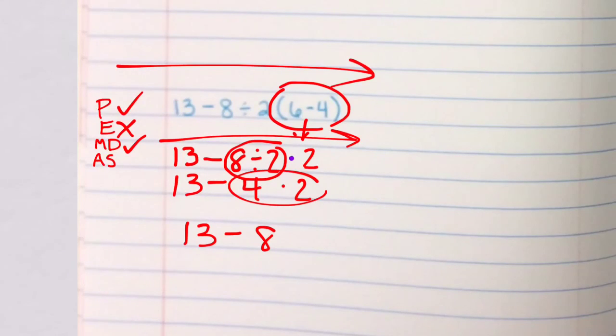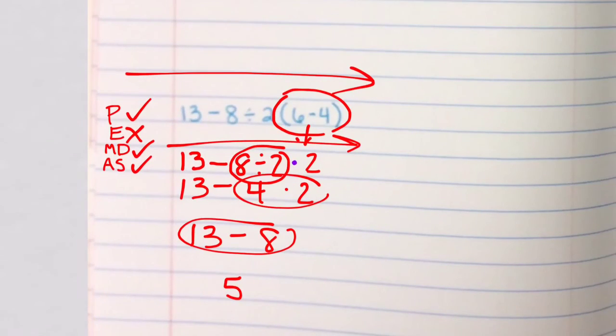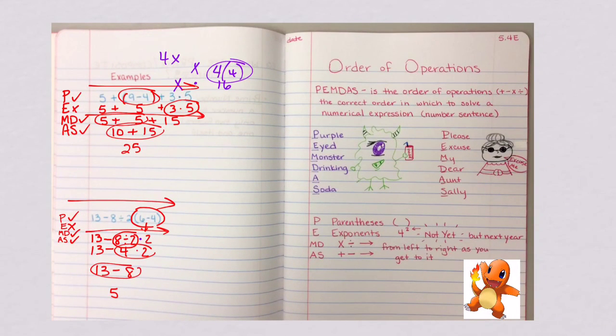So now I'm done with my multiplying, dividing step. I'm going to do my add, subtract. That's the last step I have. 13 minus 8 is 5. And we're done. Be sure you get all of this copied into your notebook. And we'll talk some more about it and practice some more with it tomorrow.